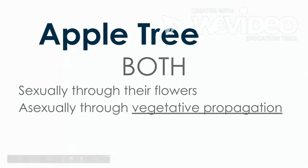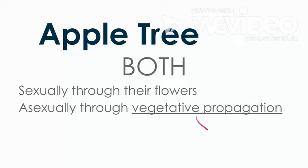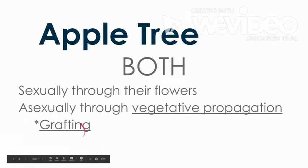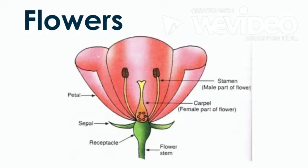Let's talk about what vegetative propagation is. I gave you a specific instance of grafting, and there are a couple different types of vegetative propagation we're going to talk about — grafting is the first one. First, let's quickly review how flowers are sexual organs, since we've talked about this before, just to refresh your memory. Remember, this doesn't apply to all flowers, but most flowers have both a female part, here in the middle, and a male part — these little brown things up here.